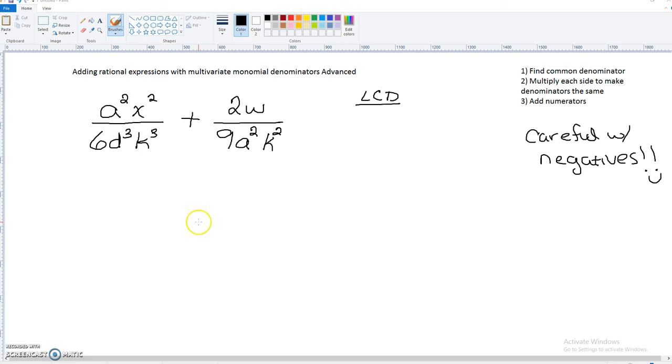Adding rational expressions with multivariate monomial denominators, advanced. As you can see here, I've included an addition problem, so make sure that as you're working on these you're paying close attention, as you may have subtraction in the midst of some of these problems.